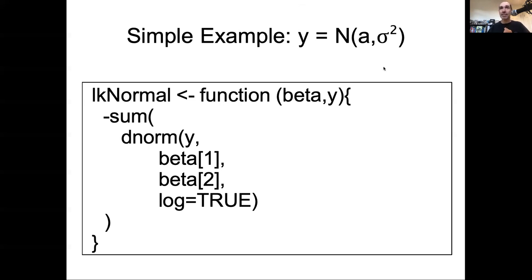The crux of writing down a likelihood for numerical optimization is writing it down as a function. Here's an example of taking this likelihood, normal with a mean and a variance, and writing that down numerically. First I need to give my function a name. I'll just call this lkNormal for normal likelihood. I'm going to say that this is a function. The things that get passed in are going to be the parameters as a vector. This model has two parameters, but I need to pass in all the parameters as a vector because the numerical optimization algorithms always expect a vector parameter. In this case it's going to be a vector of length two.